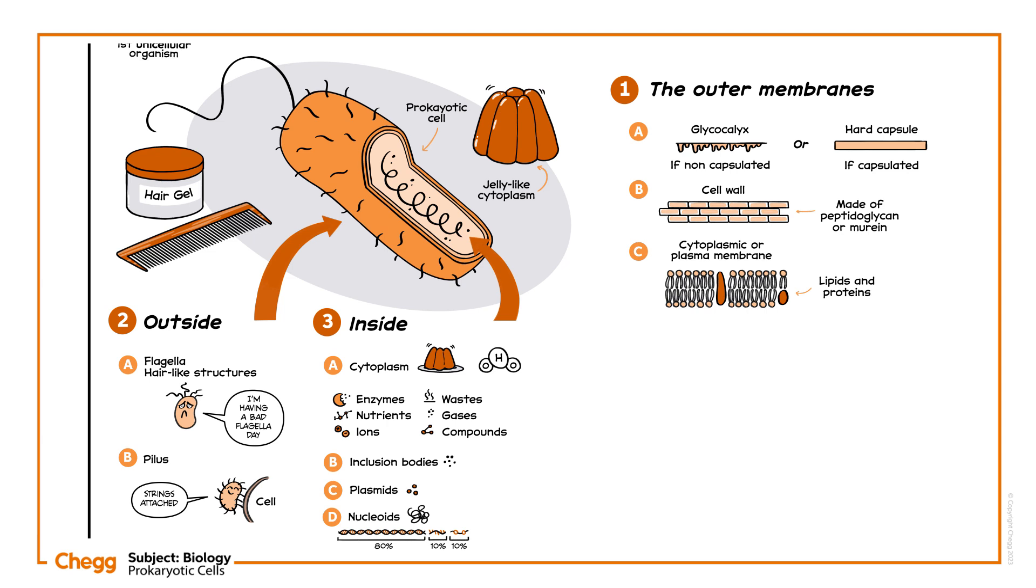Elsewhere in the cell, there are also smaller circular pieces of DNA called plasmids.